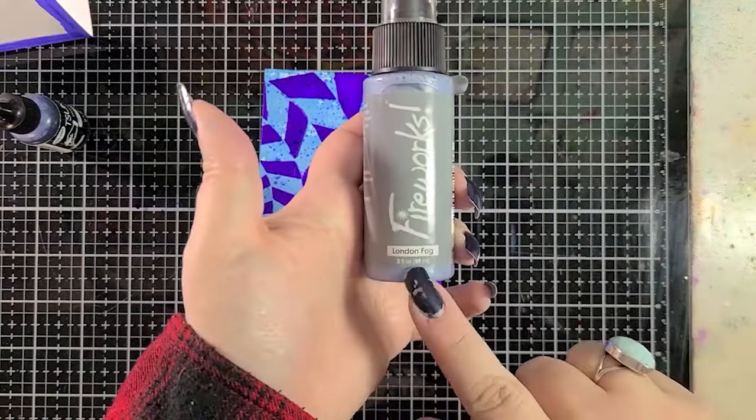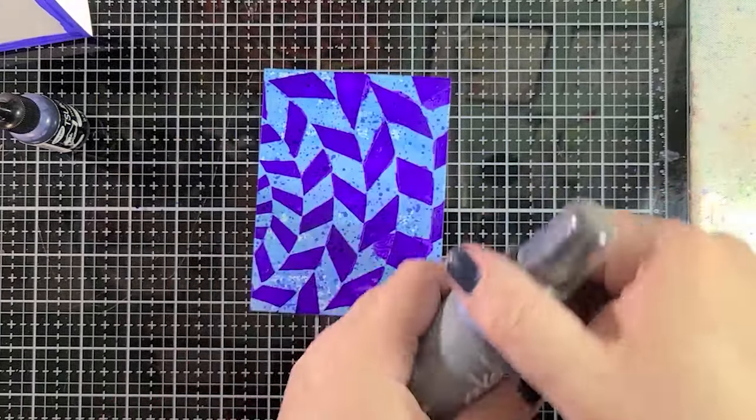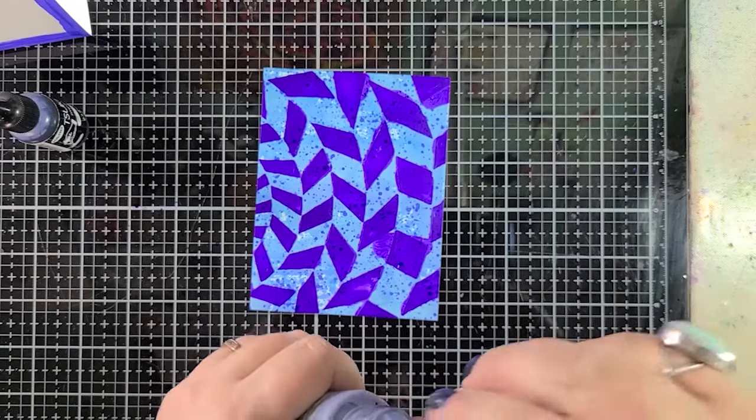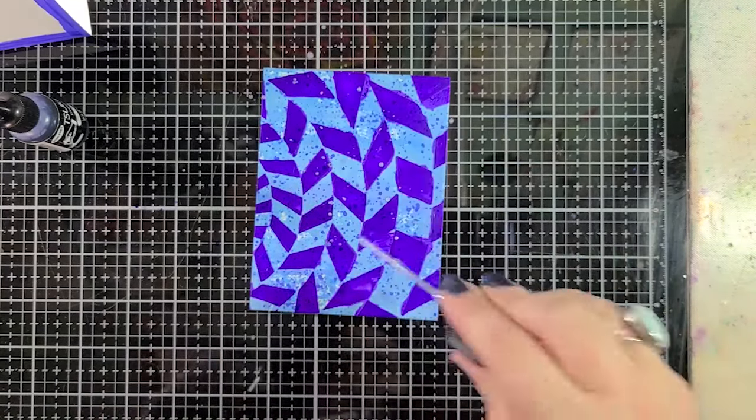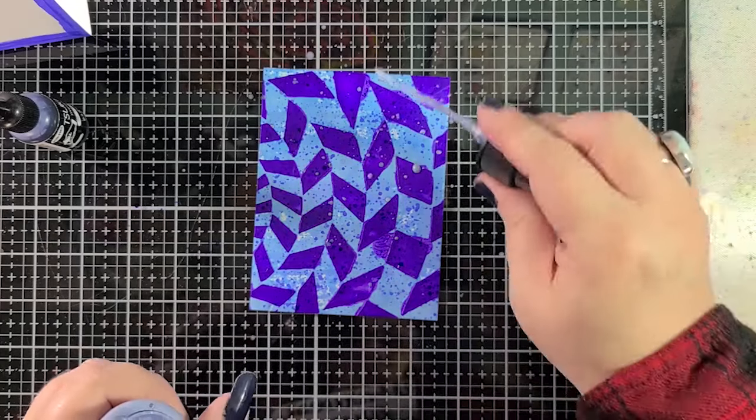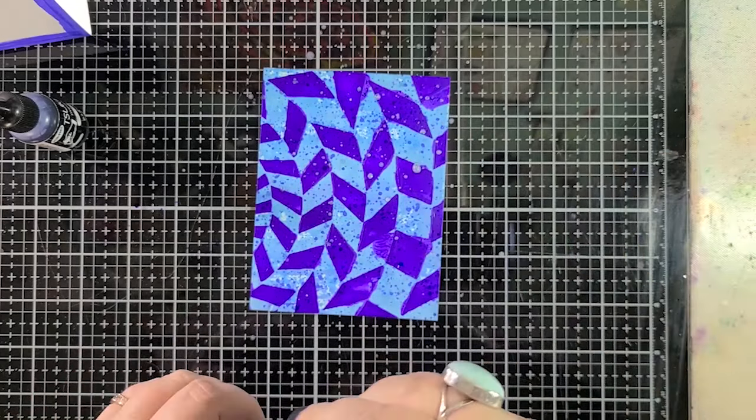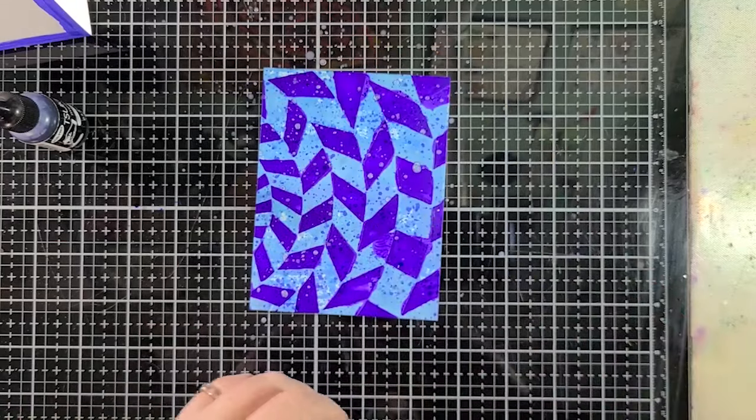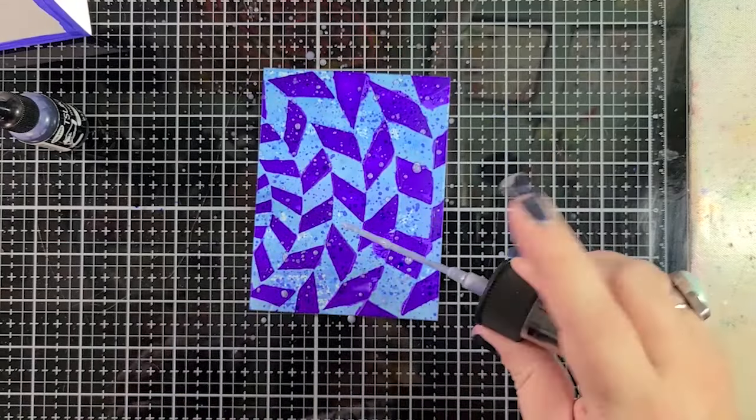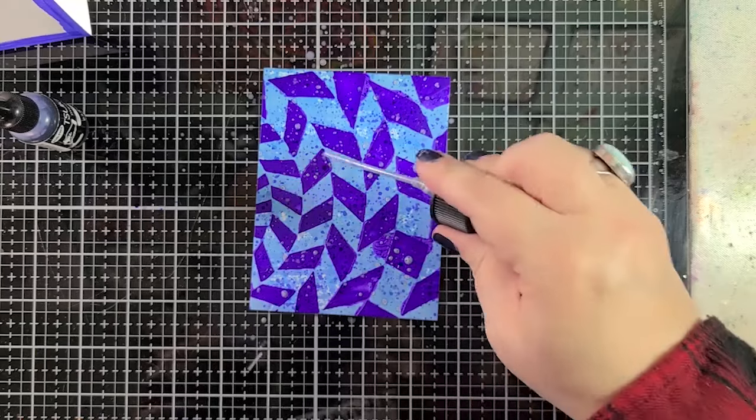I've got firework spray in London fog. You can also use any of the sheer shimmer spritzes. I was going to use silver but I don't happen to have that right now so we're going to go with London fog. This will work too. And again I just shook this up because there's that mica powder in the bottom and you want to make sure that gets mixed into the colorant and just splattering this all over.